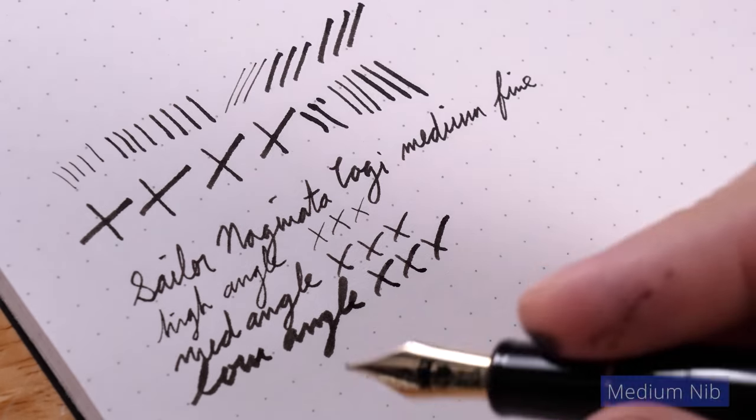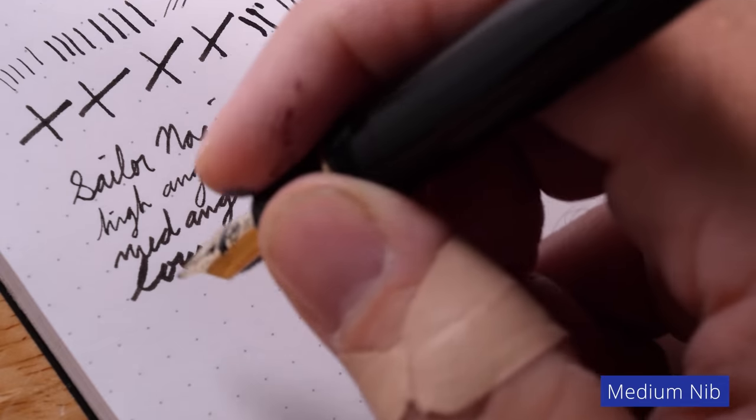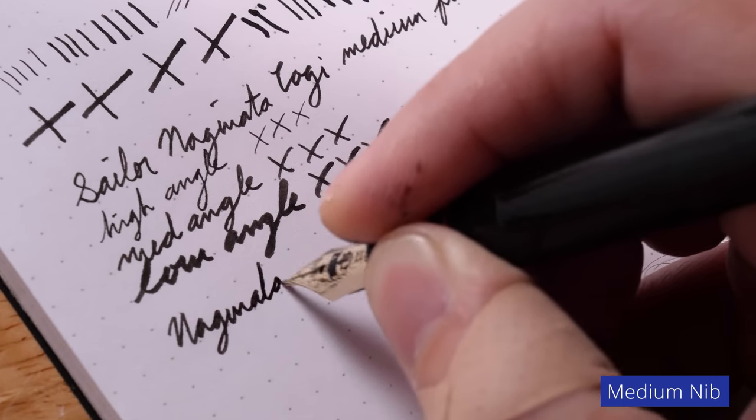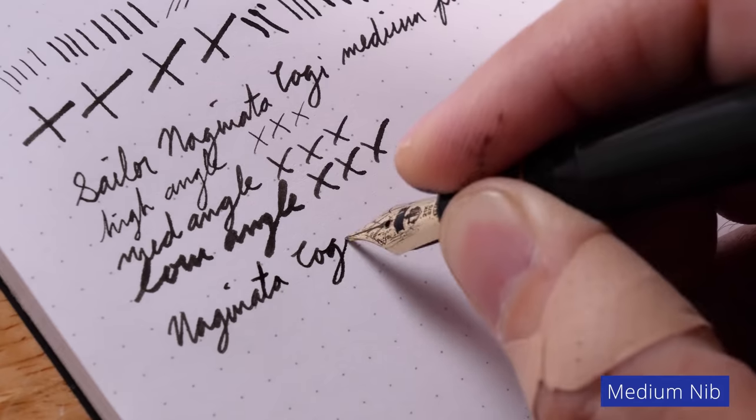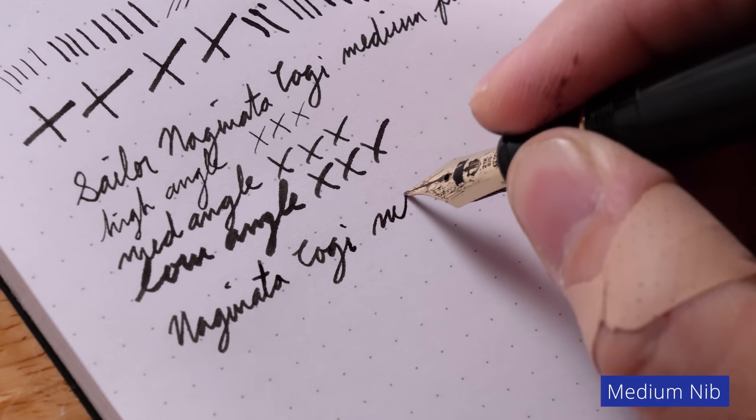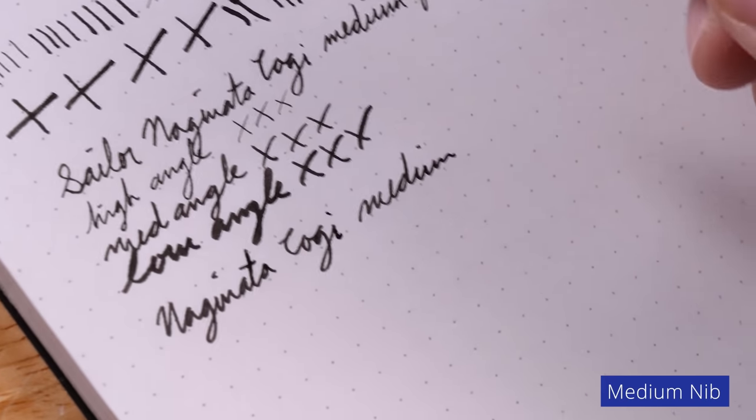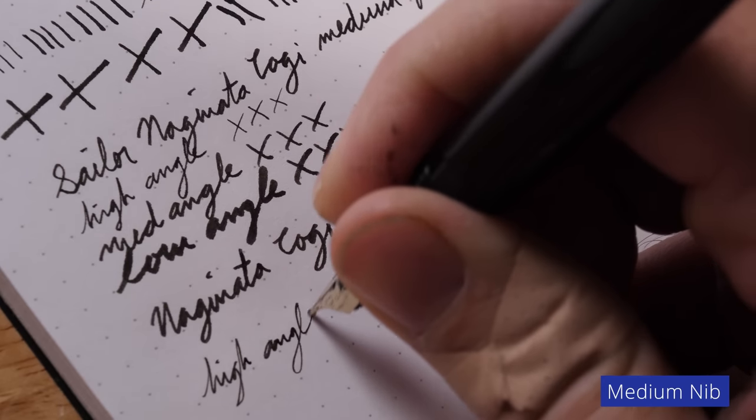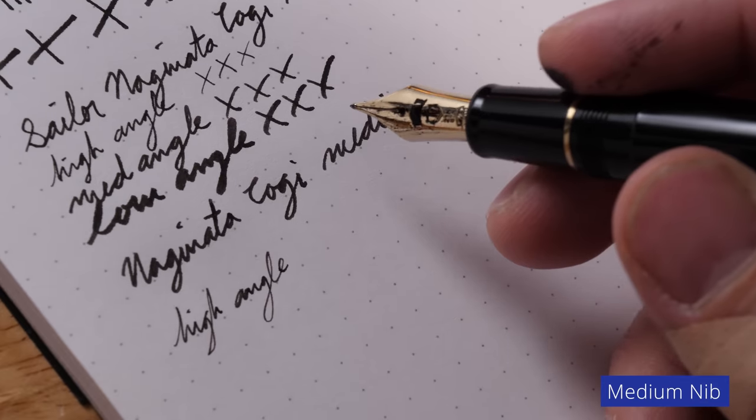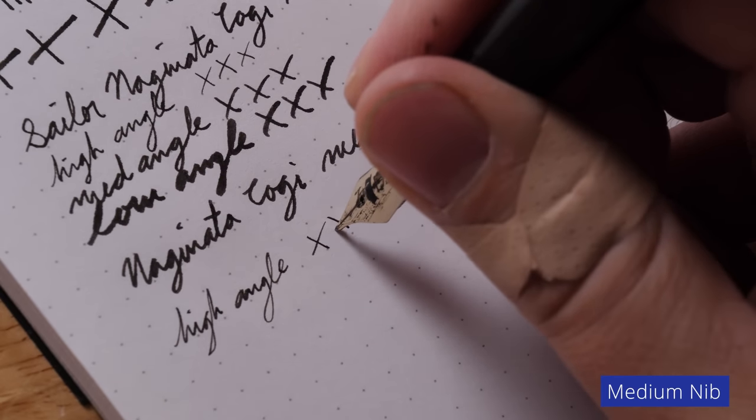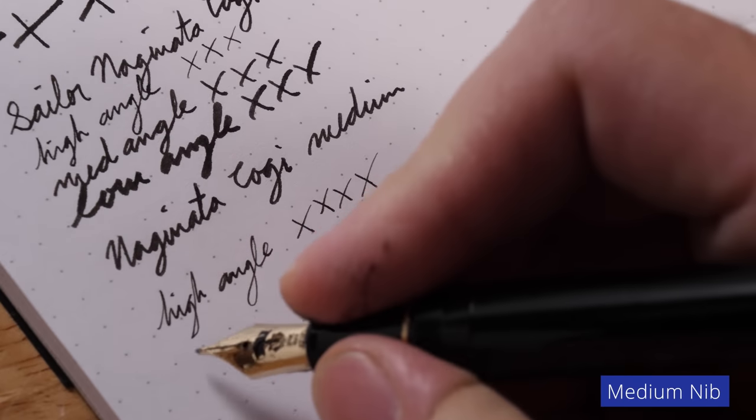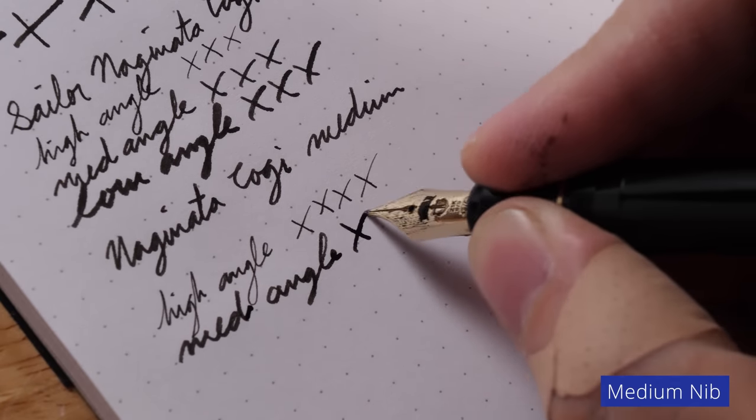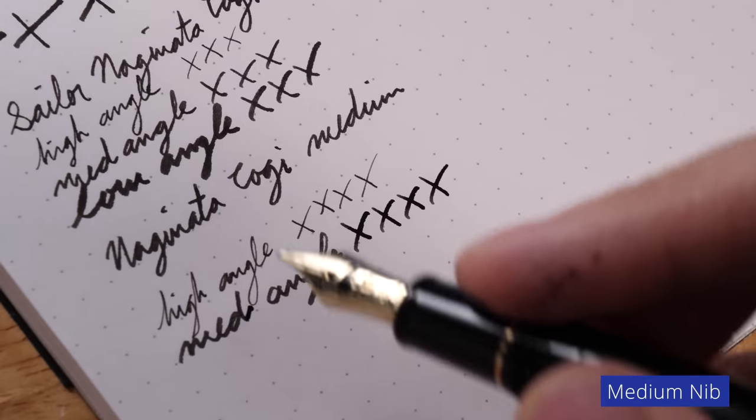Let's go to the medium. All right. So now this is going to be the medium nib. Not as dramatic a difference as the medium fine. It's definitely a little broader, a little wetter. So here, if I go high angle, it's going to be a very fine line, much like the medium fine, do a few X's. I go a little lower medium angle. Now it's wetter. Now you can tell the difference. It's starting to separate itself a little bit from the medium fine.